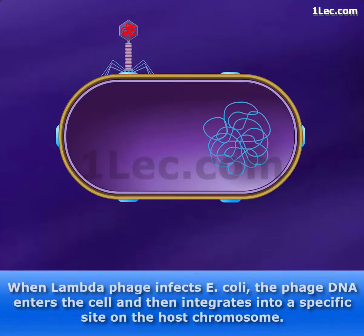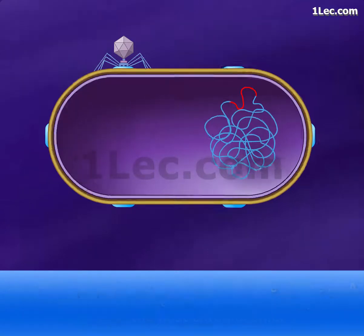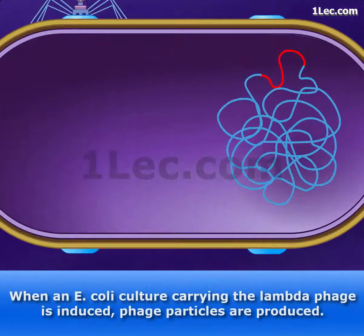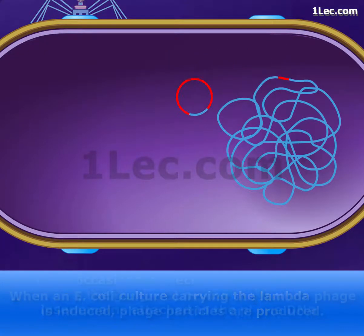When lambda phage infects E. coli, the phage DNA enters the cell and then integrates into a specific site on the host chromosome. When an E. coli culture carrying the lambda phage is induced, phage particles are produced.